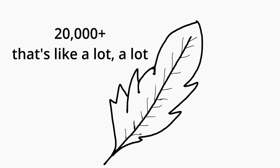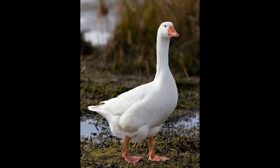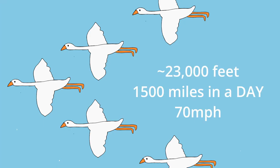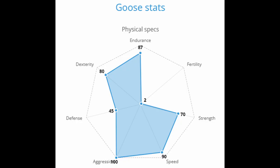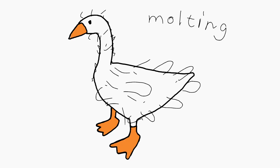As for feathers, geese have over 20,000 of them on average, which when you look at a goose, it's hard to imagine there are 20,000 feathers on that mass of anarchy. During flight, a goose can reach altitudes of 4.5 miles high and can also travel around 1,500 miles in a single day, which is made possible by their ability to fly up to 70 miles per hour in the right conditions. So you could probably have a road race with a goose and you might not even win. However, despite all of these unbalanced stats, geese do have one critical weakness: molting.